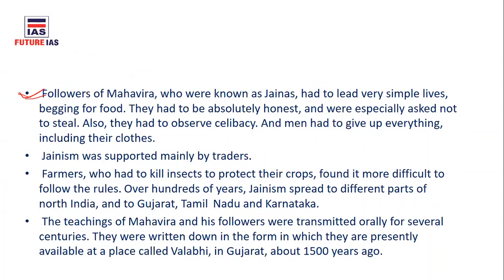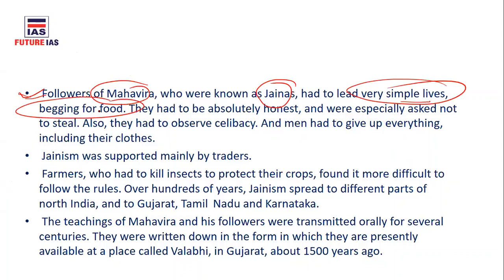The followers of Mahavira — known as Jainas — lived very simple lives, begging for food and living with absolute honesty. They were instructed never to steal. Mahavira believed that all living beings long to live and life is very dear to all. Men who were strict followers had to give up everything, including their clothes. This led to two sects: the Digambara (sky-clad, without clothes) and the Shvetambara (white-clad, wearing white clothes), which originated later.